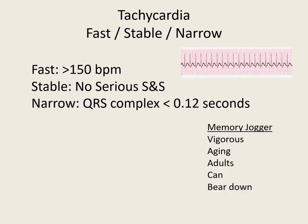Now we're going to talk about fast, stable, and narrow. Fast being over 150 beats. Stable being no serious signs and symptoms. And narrow — that QRS complex is less than 0.12 or three little boxes. Our memory jogger for fast, stable, and narrow is 'vigorous aging adults can bear down.' The vagal maneuvers, adenosine 6 milligrams, then adenosine 12 milligrams, then a calcium channel blocker, and last is a beta blocker.